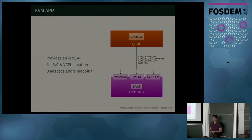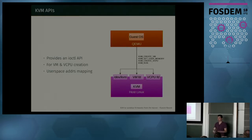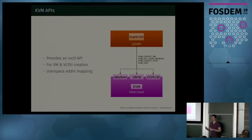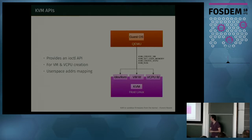Since KVM has been designed for user space programs, when you attach a memory slot to your virtual machine, the physical memory of the virtual machine is actually mapped from the address space of the process. For instance, if you run QEMU, QEMU can allocate a range of memory, and that memory will be used as the physical memory of the virtual machine. That's important for the rest of the talk.